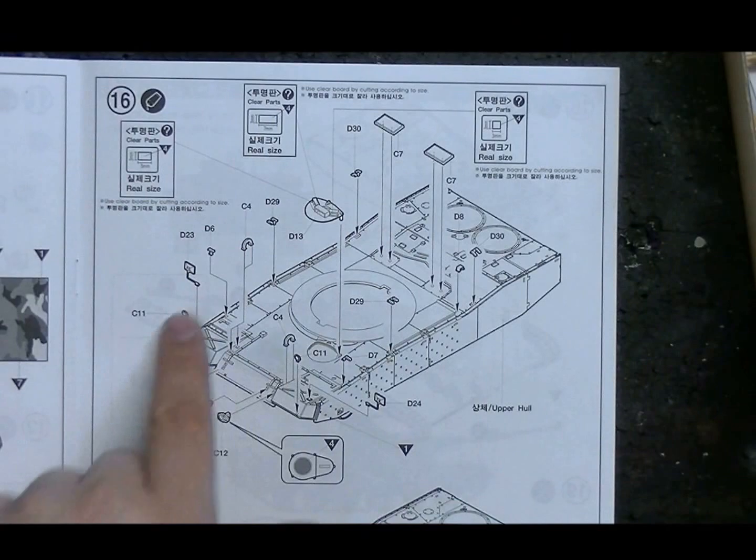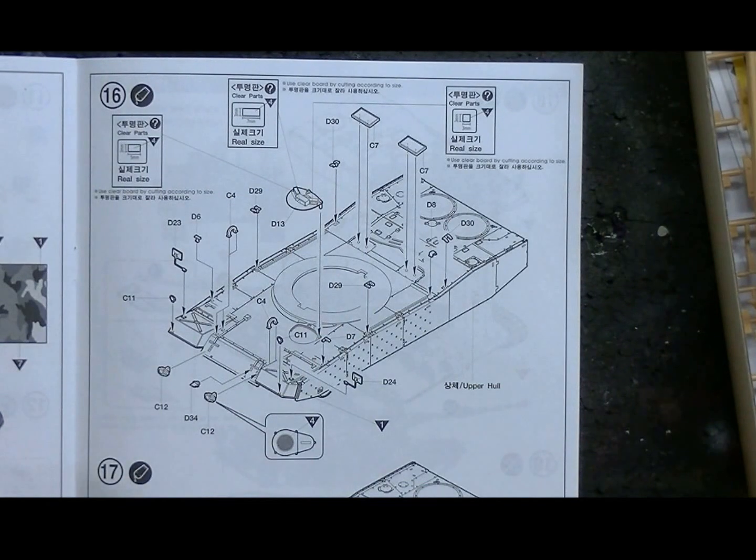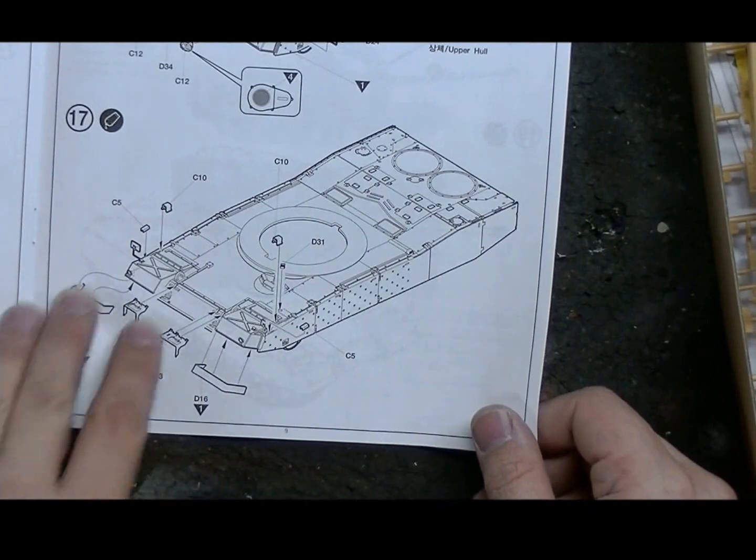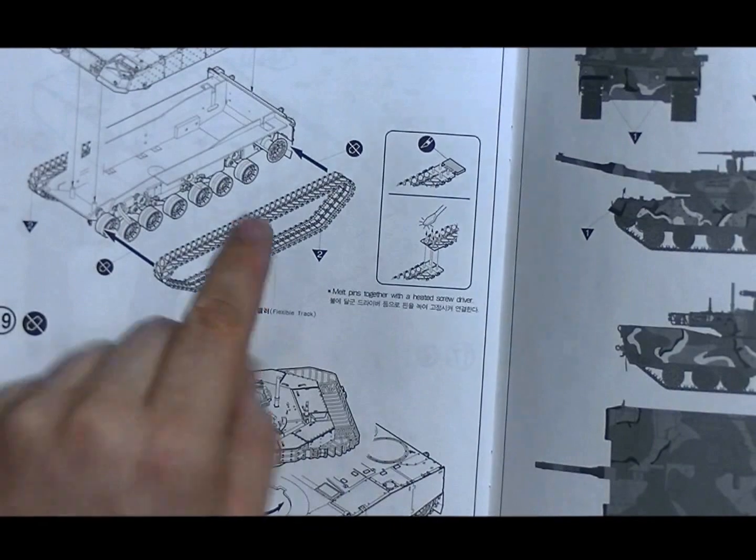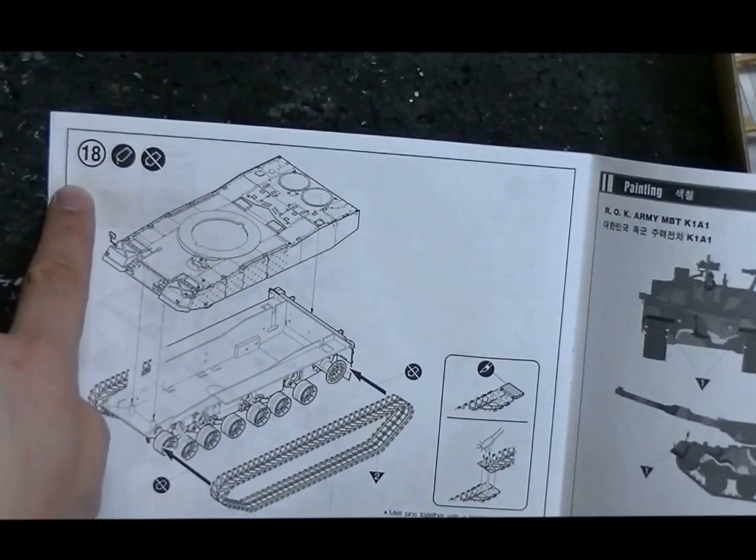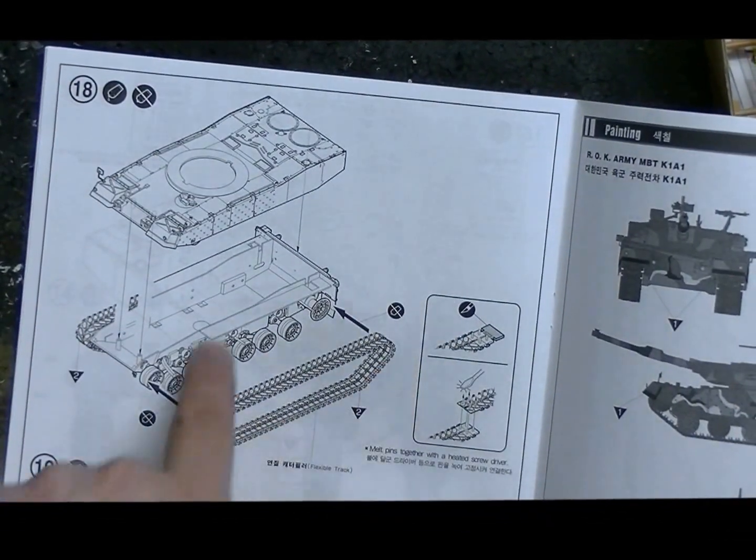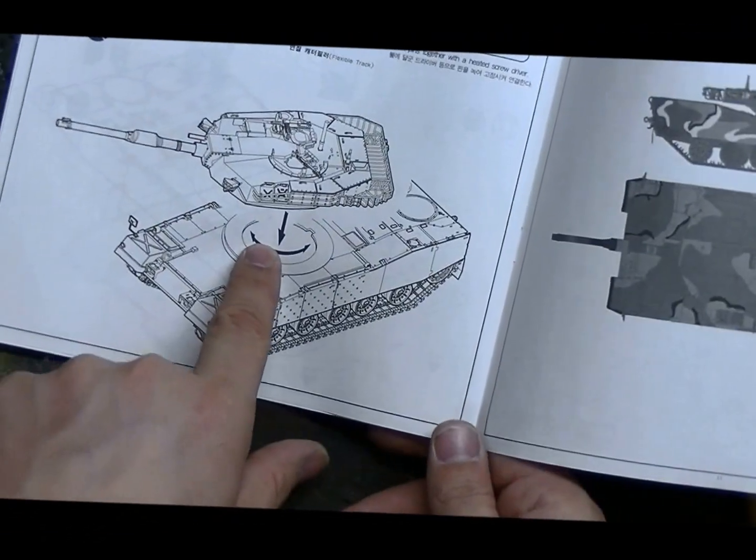This is smart. Now at step 16 they start putting all the small stuff on top of the upper hull, that what we normally would do at this stage. They thought about this one. And a little fenders, stuff. And then almost the last stage they attach the tracks, that's nice, and then the turret. And then it's painting, you got only one scheme. And then here's the sprue overview.